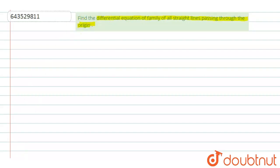So here we have to find the differential equation of family of all straight lines. Since equation of straight line passing through origin is y equals to mx, where m equals to slope of the line.